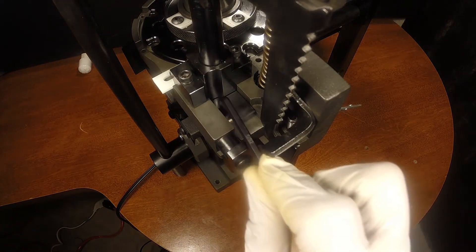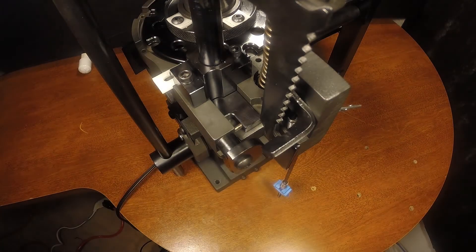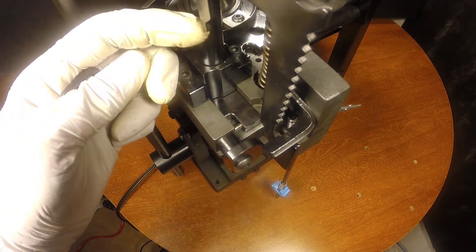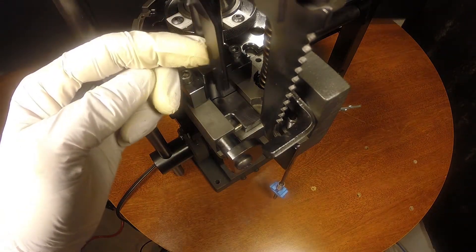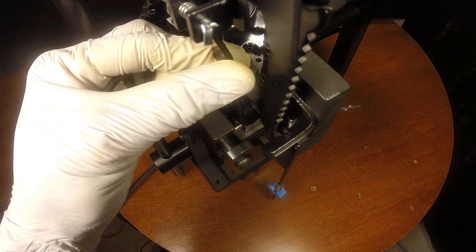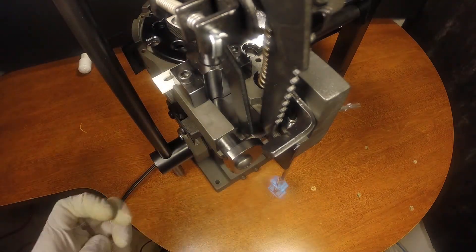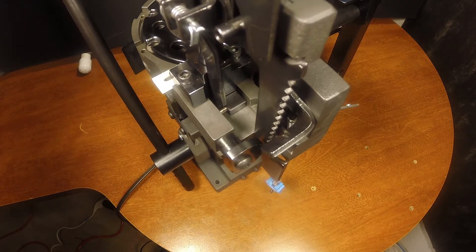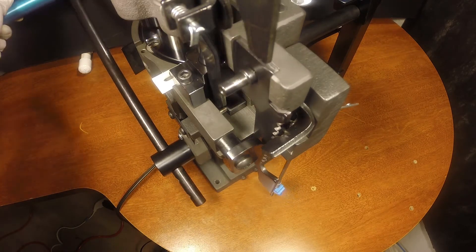Manually move the primer slide about halfway under the shell plate. Loosen the primer assembly and slide it down until it touches the bottom of the primer slide slot. Check for smooth operation and tighten the bracket screw.